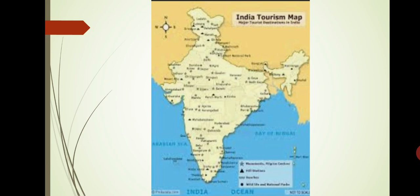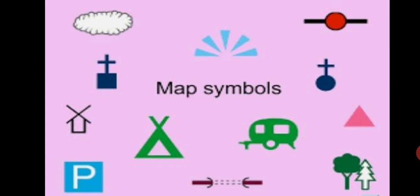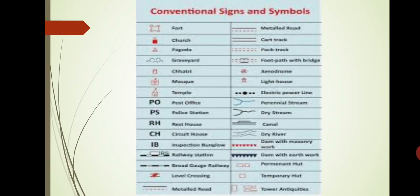Many people use maps. Many components are shown in maps or outline maps. If these components are shown on different maps in different ways, it will be difficult to understand them. Therefore, standard signs and symbols are used to make the map easy to read. Let's learn about conventional signs and symbols.